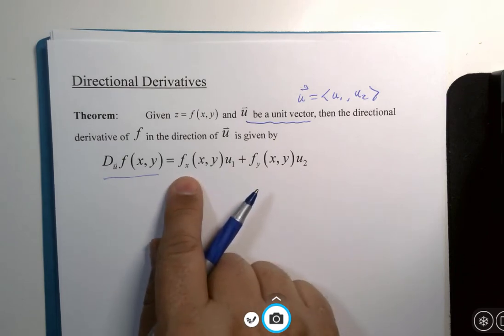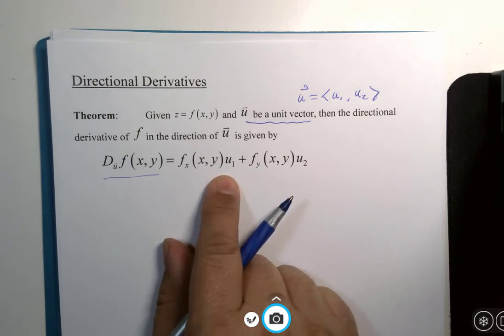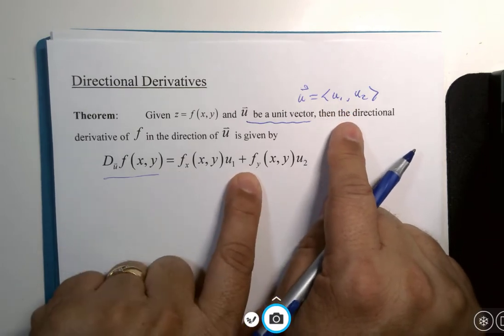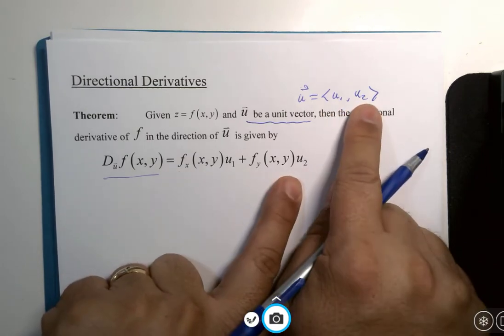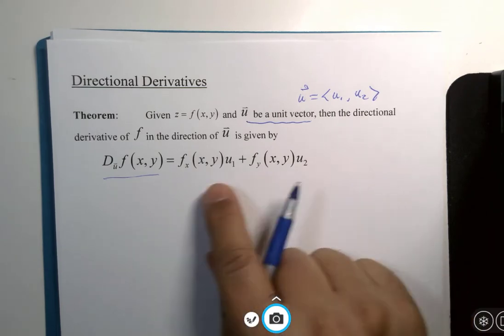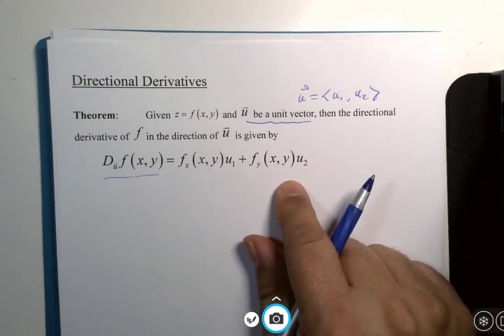Partial derivative of x for our function multiplied by the first component, so the x components kind of go together. Partial derivative of y of the function multiplied by the second component. And this will supposedly give us the calculation for the directional derivative without having to do a limit process, the definition.